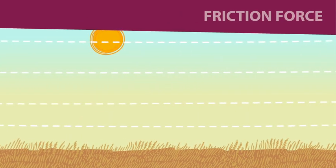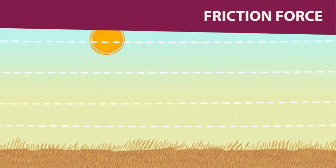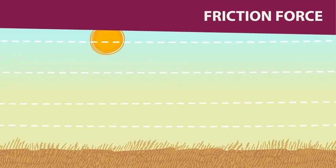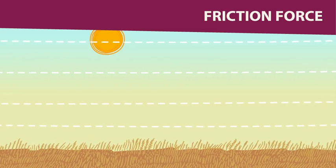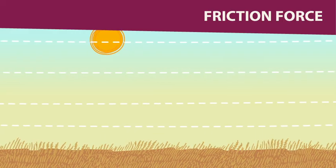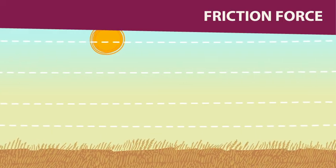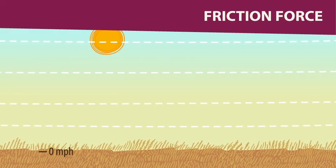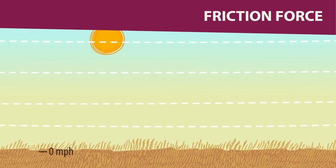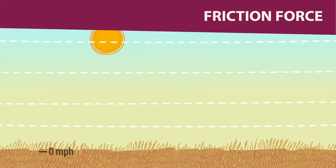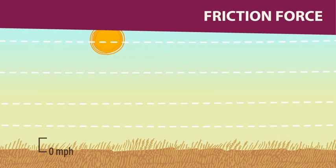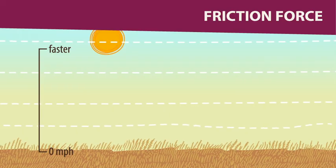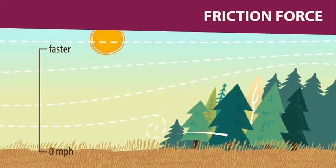The final force acting on wind is friction — primarily the friction caused by the Earth's surface and vegetation cover. The frictional drag is highest at the surface; in fact, the wind must go to zero at the surface because of this friction. The further you go from the surface, the less frictional drag and the faster the winds can move.